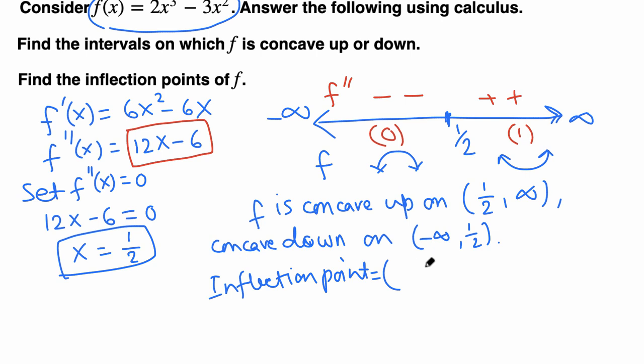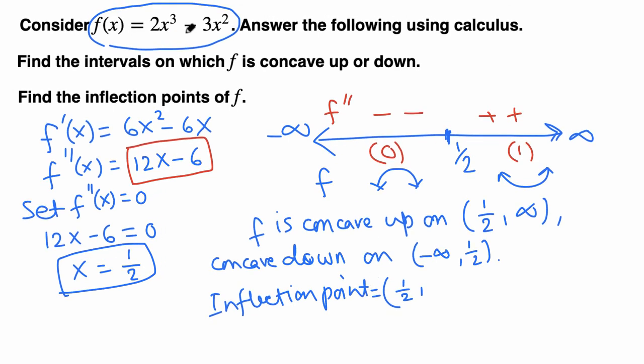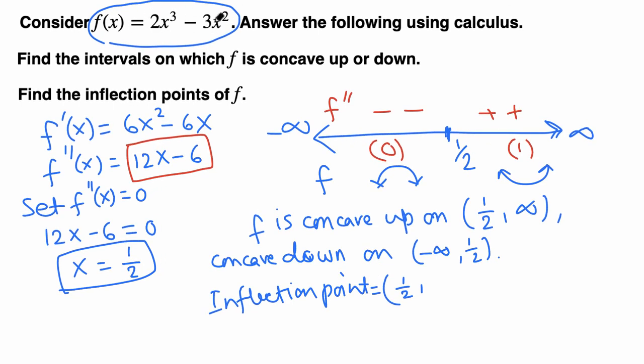Evaluate the function at x = 1/2: f(1/2) = 2(1/2)³ - 3(1/2)² = -1/2. So the inflection point is the ordered pair (1/2, -1/2).